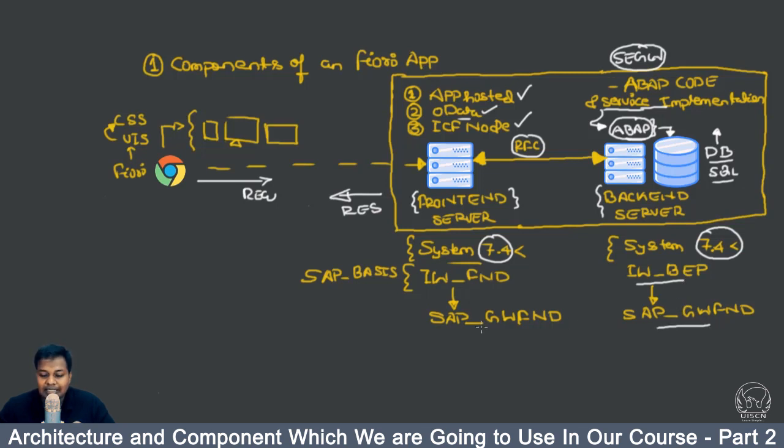So if you see the system and status, then this particular SAP_GWFND component will be what is shown. But inside the SAP_GWFND, the specific component IW_FND is for the front end server OData app hosting and IECF node responsibility is part of the IW_FND.